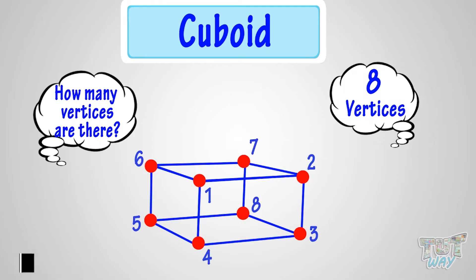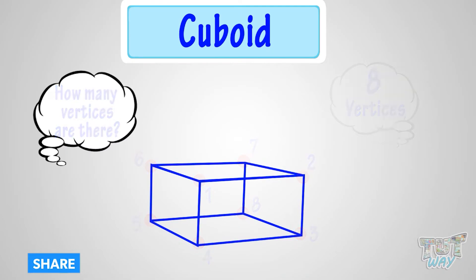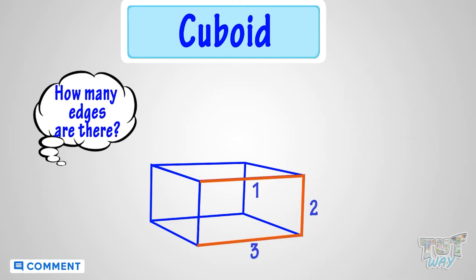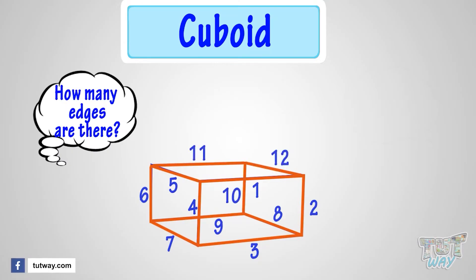Good! Now, let's count its edges. 1, 2, 3, 4, 5, 6, 7, 8, 9, 10, 11, 12! Wow! 12 edges! Also, all the edges of a cuboid are not equal, as in the case of a cube.